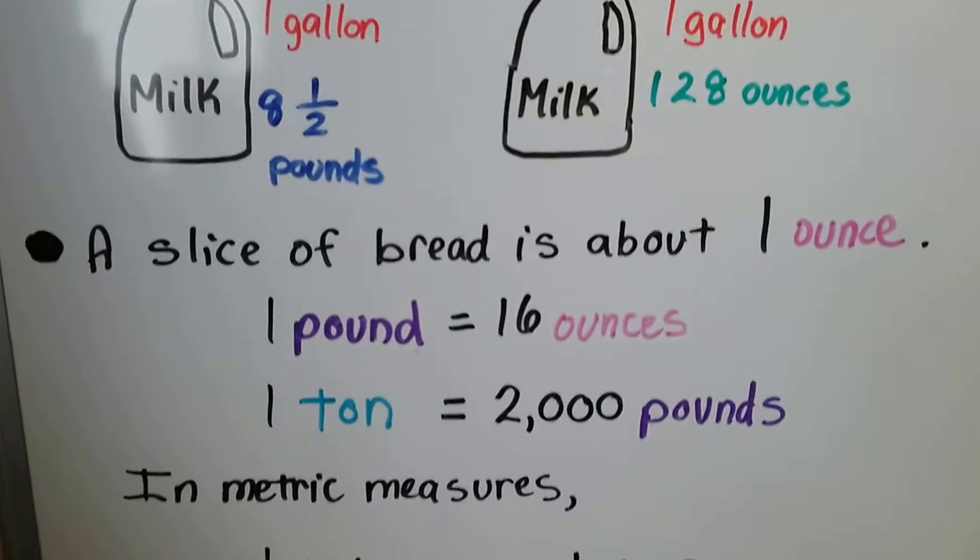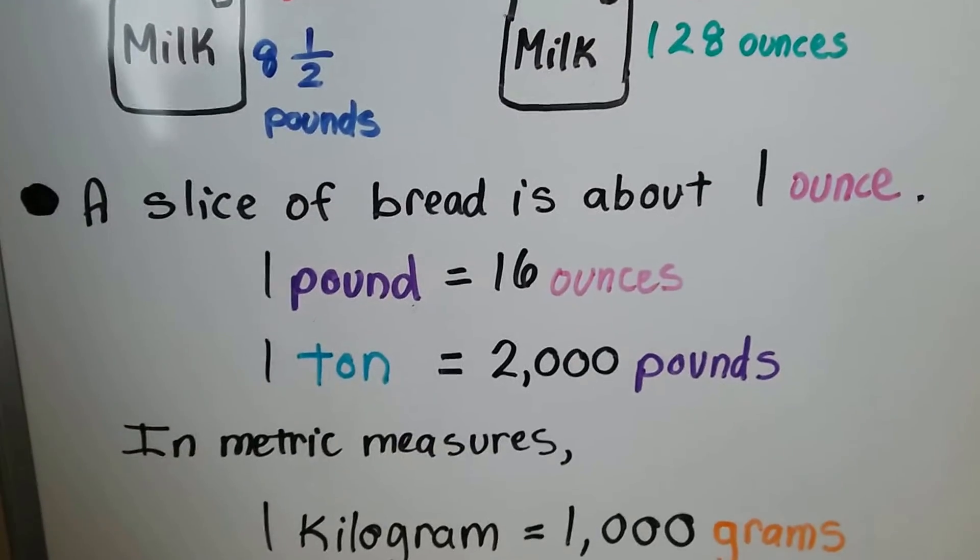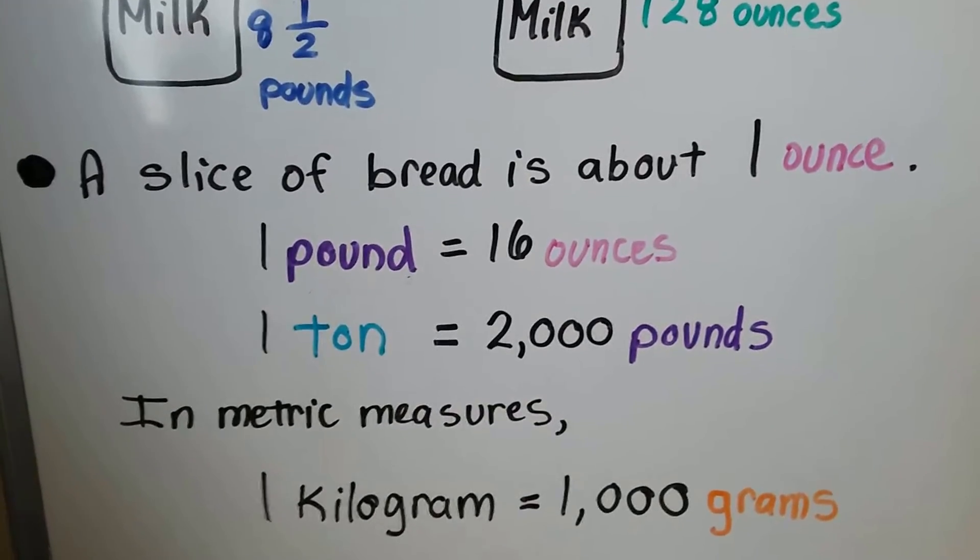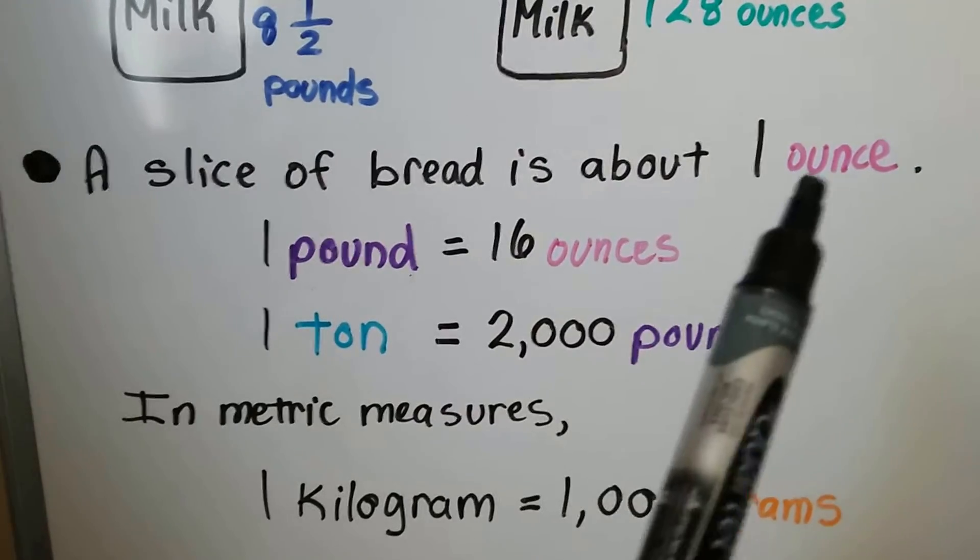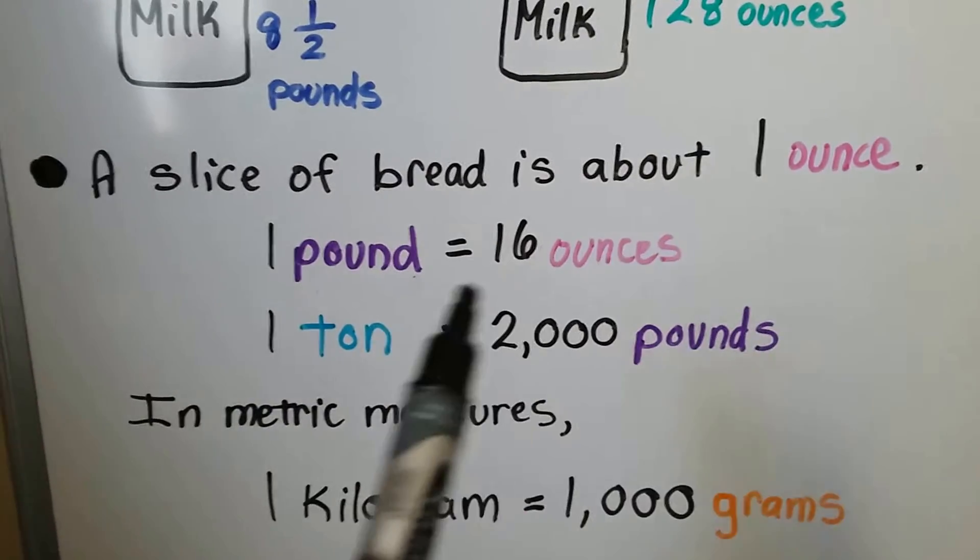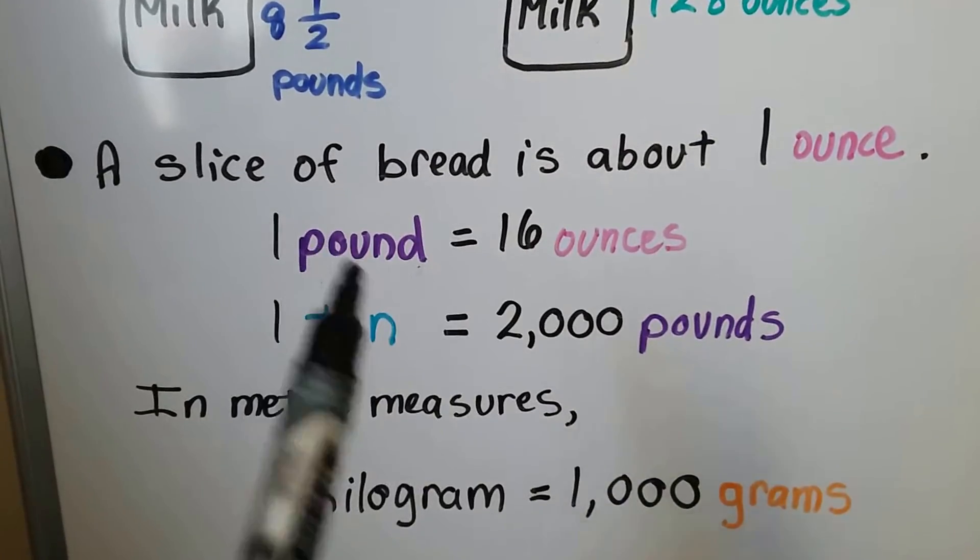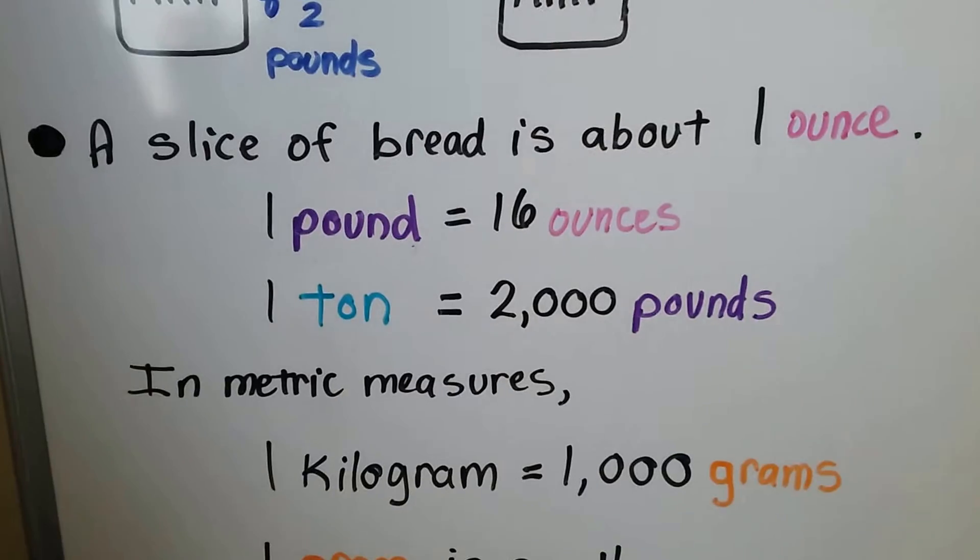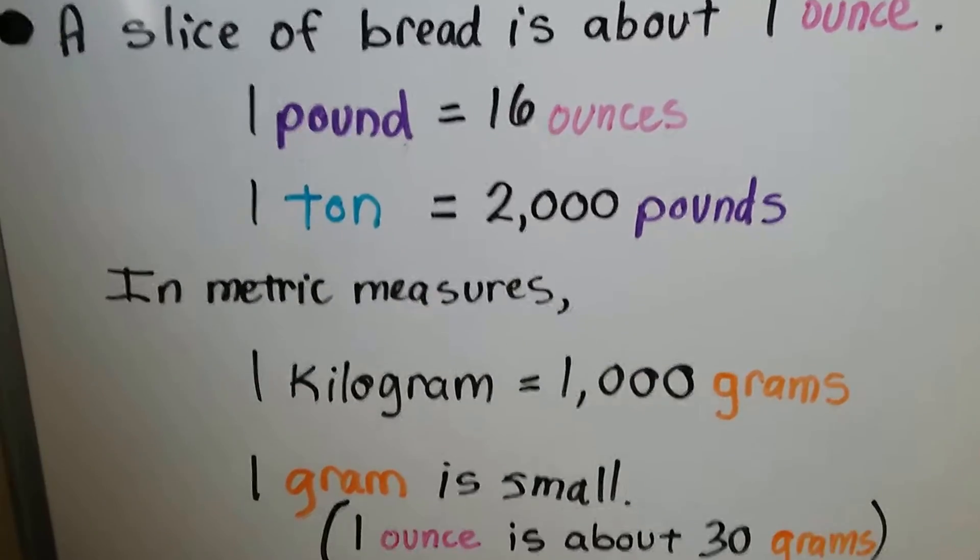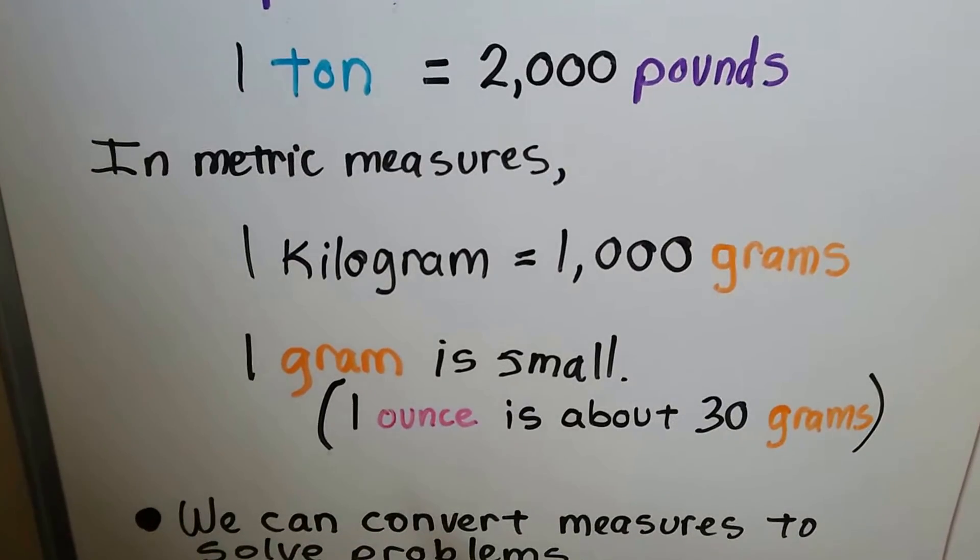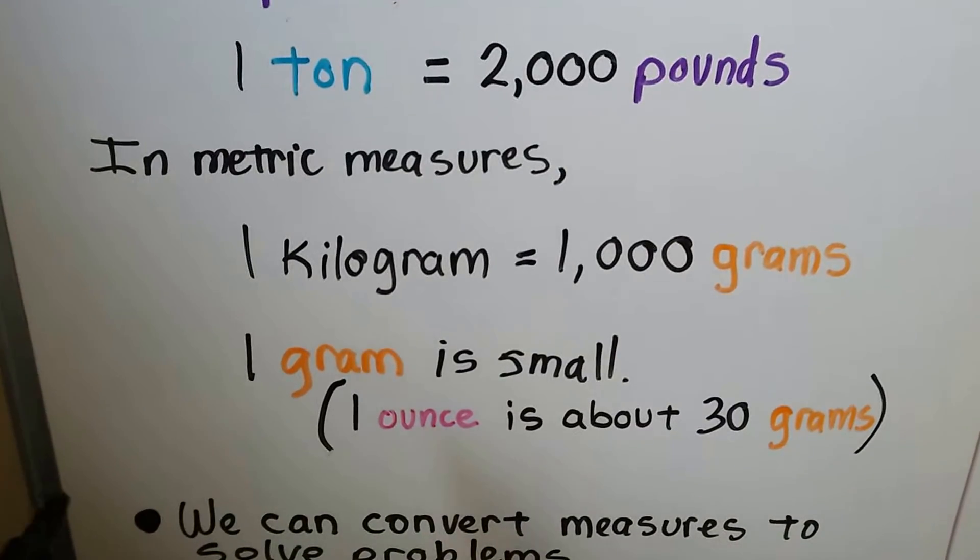A slice of bread is about one ounce. One pound equals 16 ounces. So 16 slices of bread would be about a pound. If one slice was one ounce, then 16 slices would be about a pound. One ton equals 2,000 pounds, so a ton is very heavy. In metric measures, one kilogram is equal to 1,000 grams.